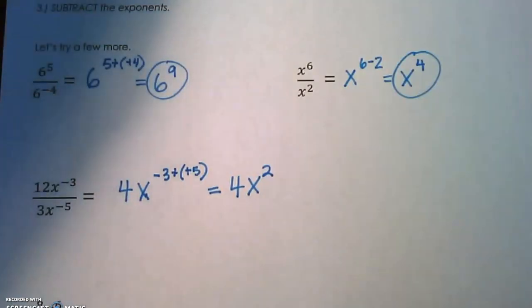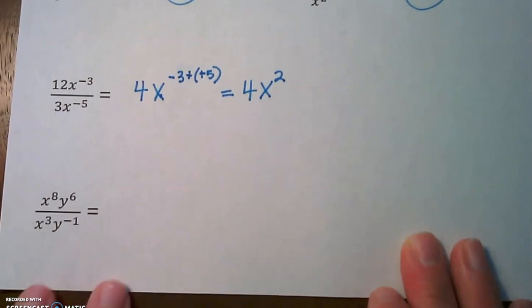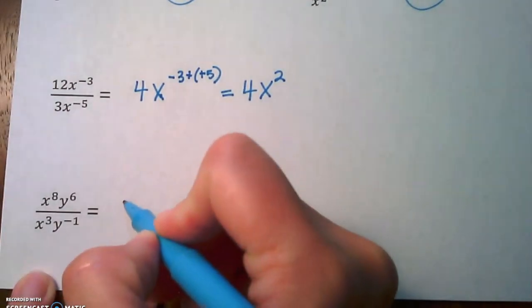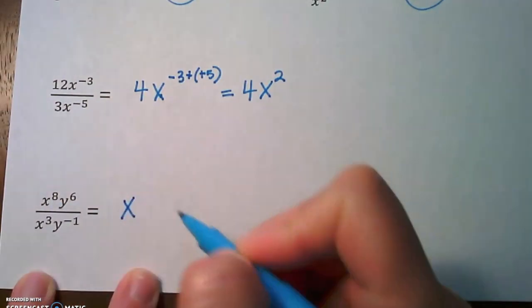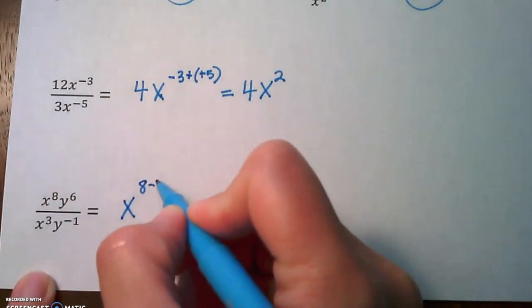When we've got two different bases, keep the bases separate. So we're going to only subtract the exponents on the x first—8 minus 3—and then subtract the exponents on the y's—that's 6 minus negative 1.